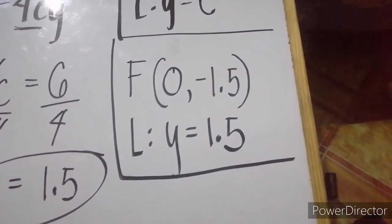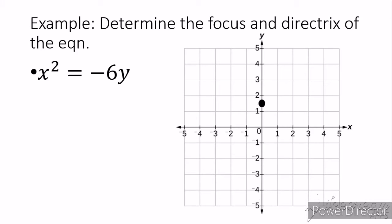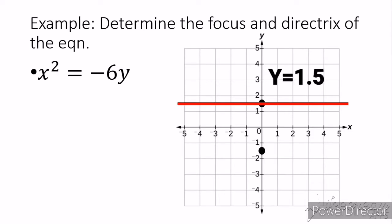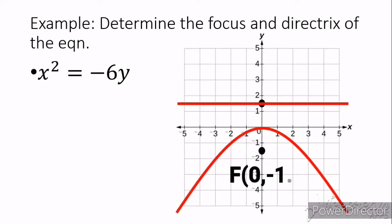Let's graph it. We already know that our focus and directrix are 1.5 units away from our vertex. We place dots at 1.5 units above and below, then locate which is the focus and which is the directrix. Since our equation opens downward, the focus should be below our vertex. Our directrix is located above our vertex, and our focus with coordinates 0 and negative 1.5 is below, with the directrix line y is equal to 1.5.